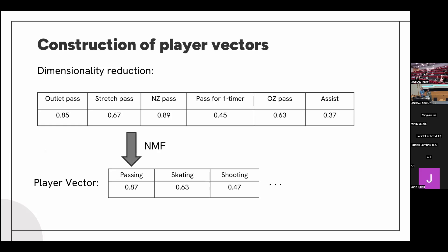We then compress this passing vector into a single value using non-negative matrix factorization, or NMF. When applying NMF, we retrieve a single value representing the passing skill level of the specific player. This value is added to the player vector in the passing column, and the whole process is repeated for every skill until we retrieve the complete player vector.